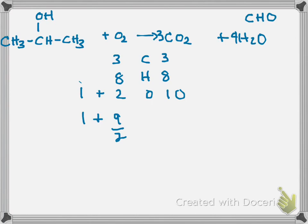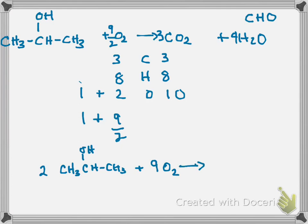So this becomes 9/2 because oxygen comes as O2. But you can't stop there — you have to multiply everything by 2 to get rid of the fractions. So you'll have 2 isopropyl alcohols, 9 oxygens, 6 CO2s, and 8 H2Os. The fastest way: balance C first, then H, then figure out the remaining O's — you're done.